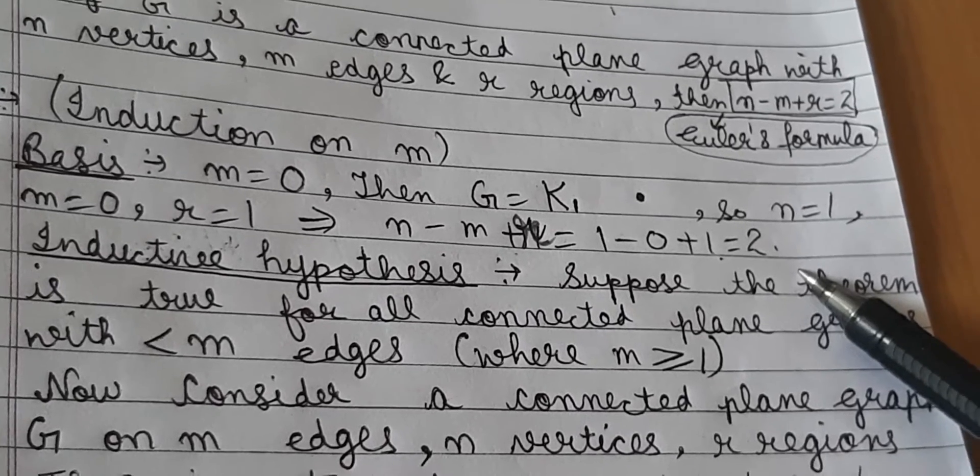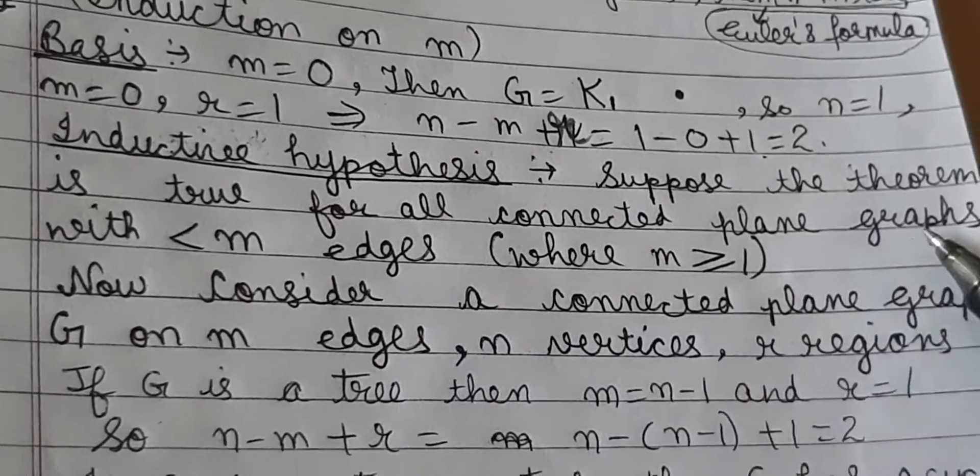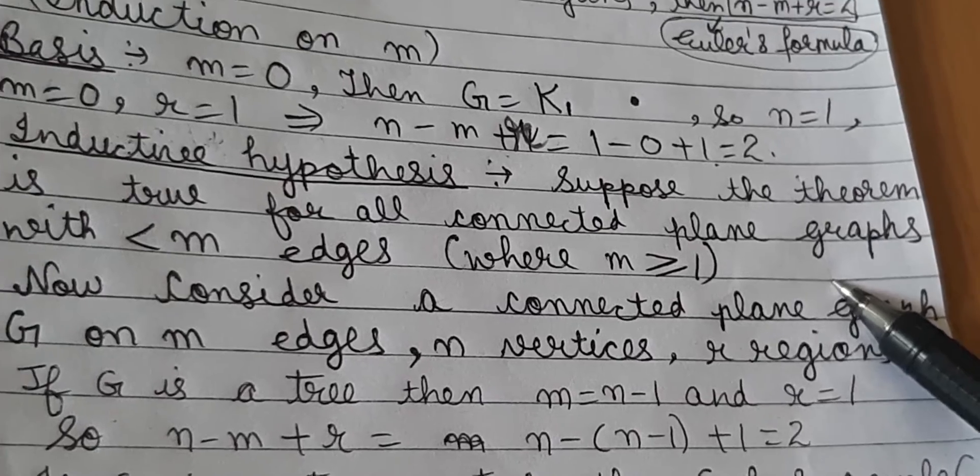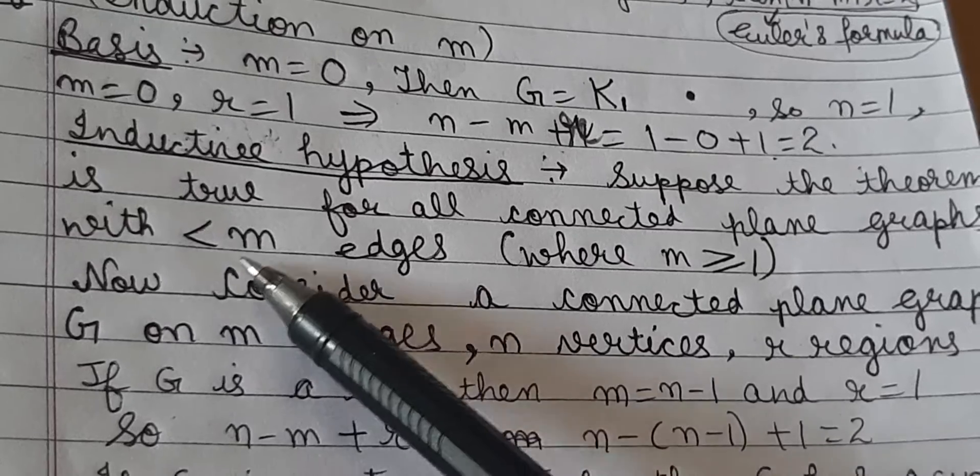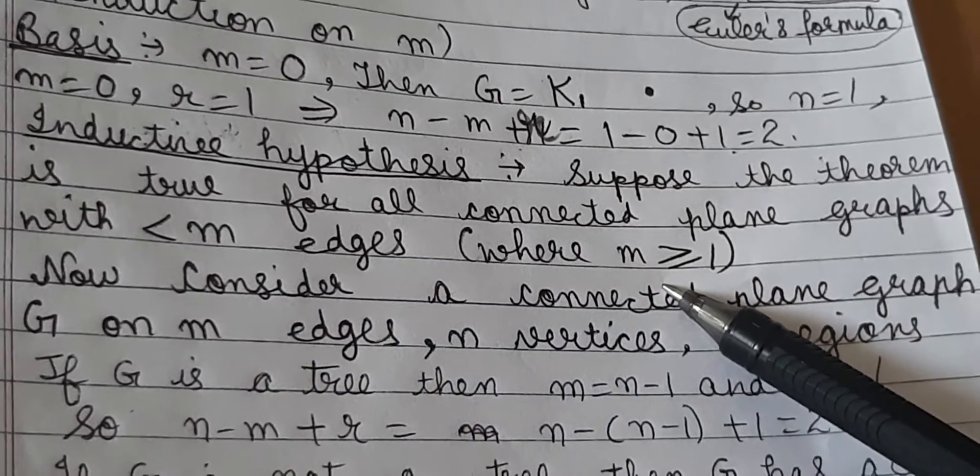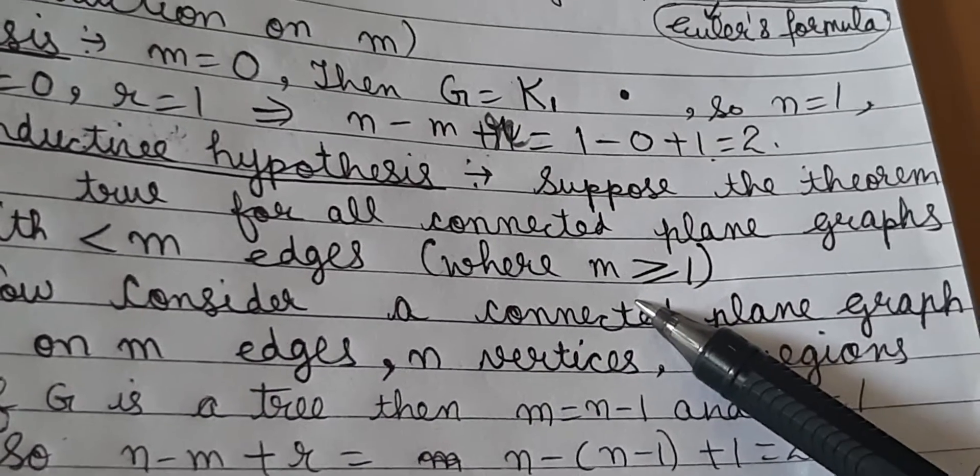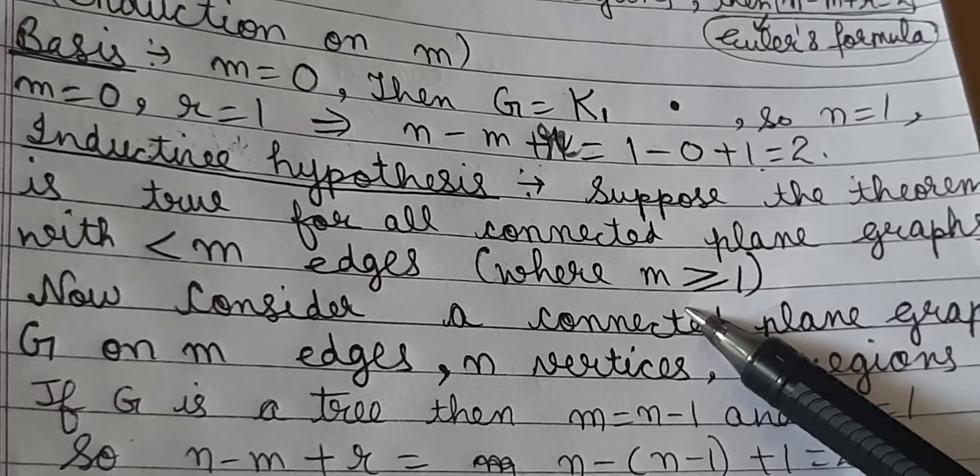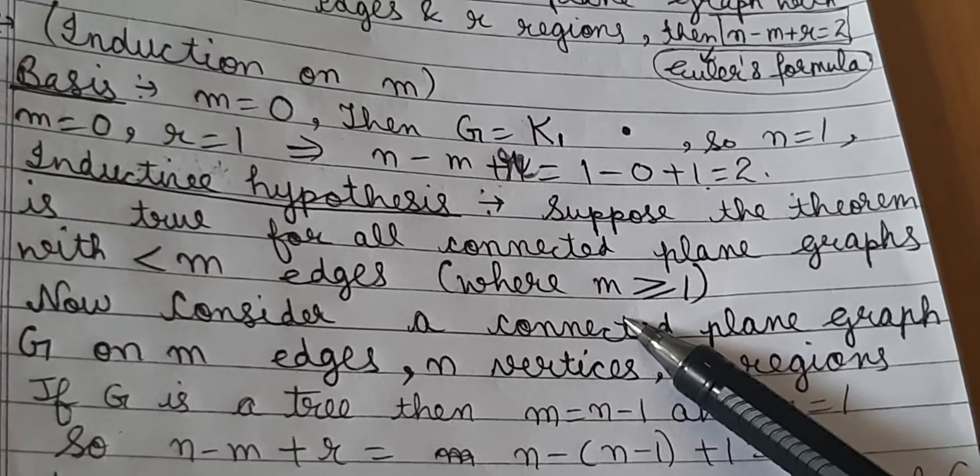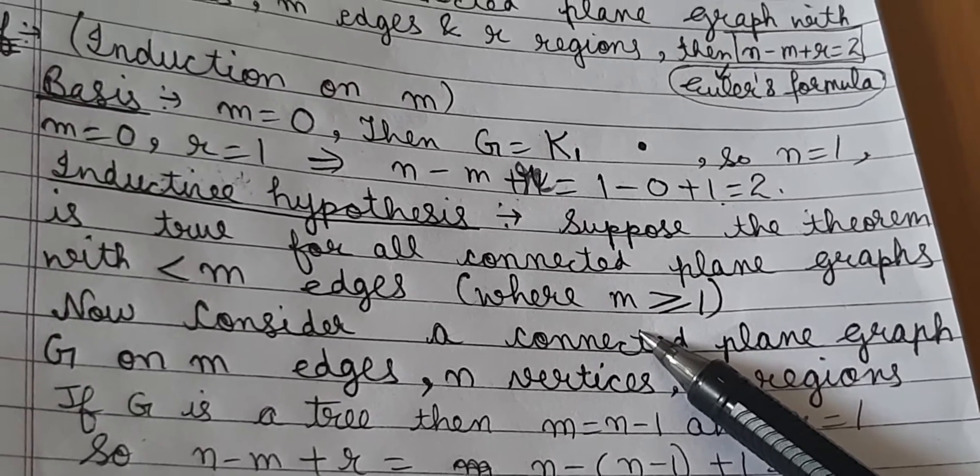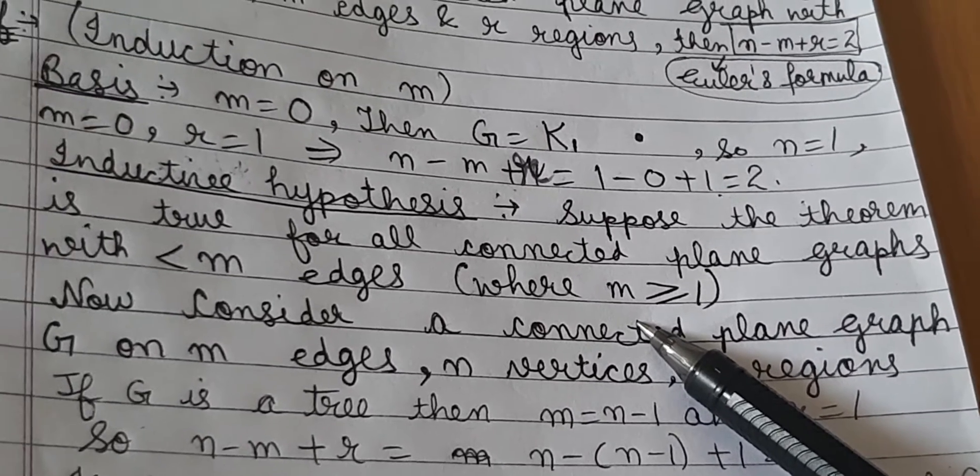Next we make the inductive hypothesis. Suppose the theorem is true for all connected plane graphs with fewer than m edges, where m is greater than or equal to 1. Next we need to use the inductive hypothesis to show that the theorem will hold for any connected plane graph on m edges.